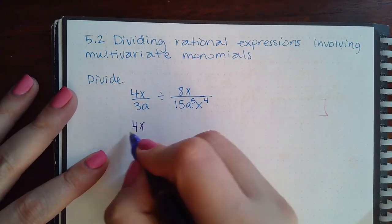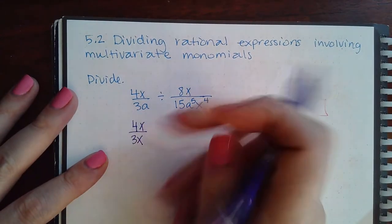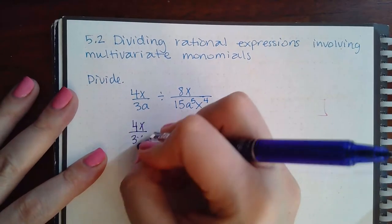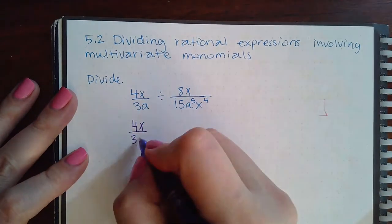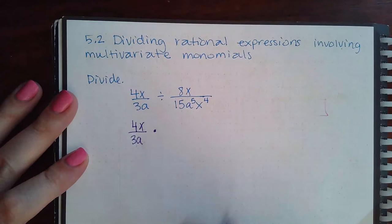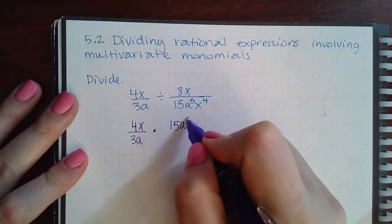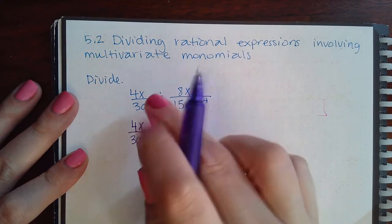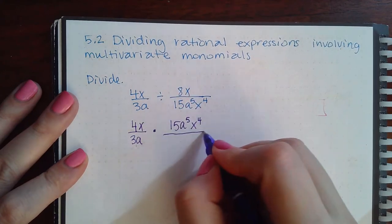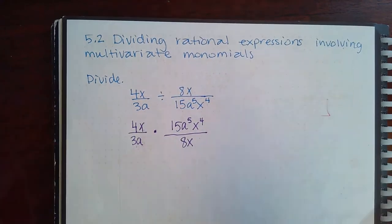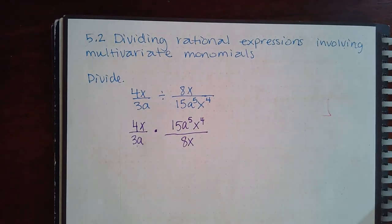That is to keep the first fraction the same, change the division into multiplication, and then take the reciprocal of the second fraction. So any fraction that follows a division symbol will reciprocate—it will flip over.